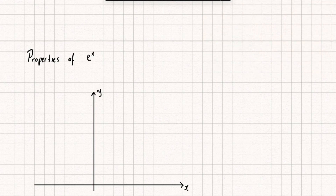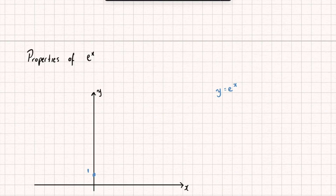Let's start off by drawing the graph of y equals e to the power of x. This shouldn't be anything too unfamiliar because this is just an exponential graph where we have a base that's positive and greater than 1, so this is going to represent exponential growth. This graph is going to pass through the y-axis at y equals 1, because when x equals 0, e to the power of 0 is 1. As x tends towards positive infinity, the output grows exponentially, and as x tends towards minus infinity, the graph tends towards 0 with an asymptote along the x-axis.